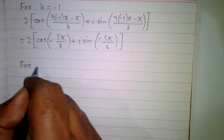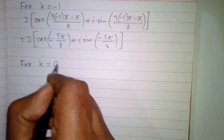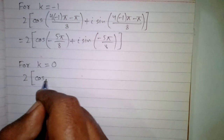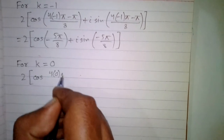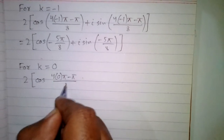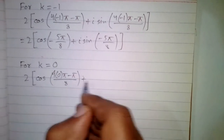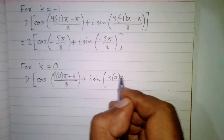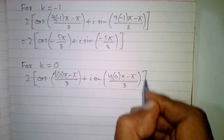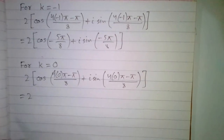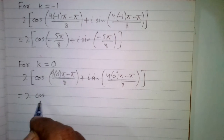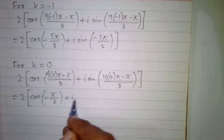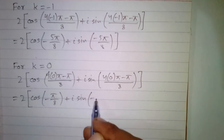For the second root, we put k equal to 0: 2·(cos(4·0·π − π/8) + i·sin(4·0·π − π/8)), which gives 2·(cos(−π/8) + i·sin(−π/8)).